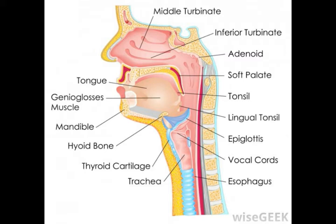The bones in the neurocranium are the frontal bone, the occipital bone, the sphenoid bone, the ethmoid bone, two parietal bones, and two temporal bones.